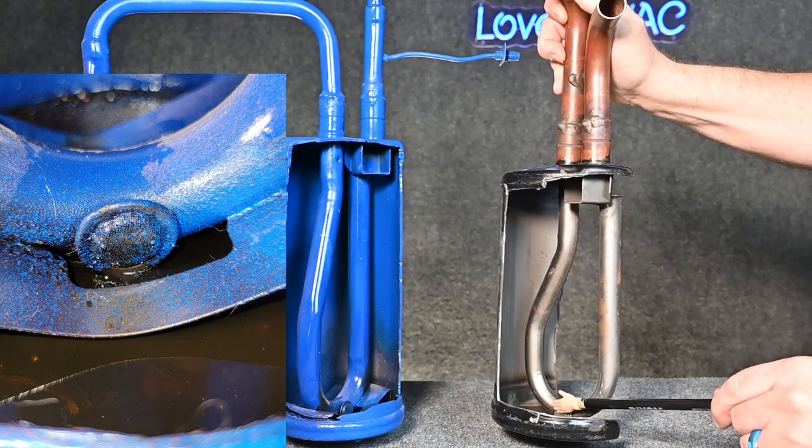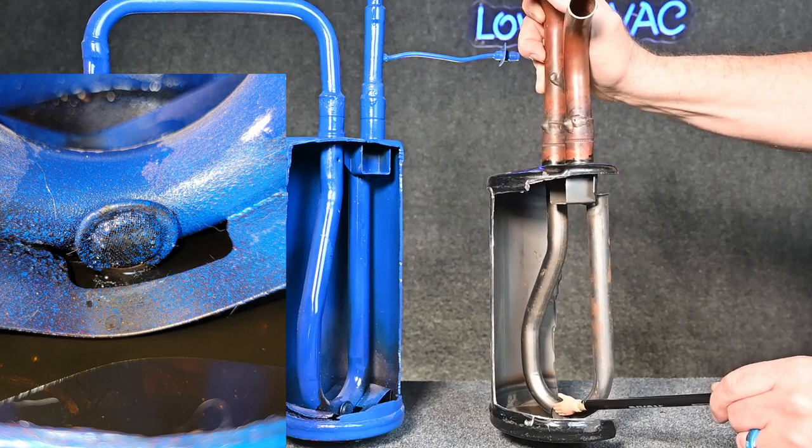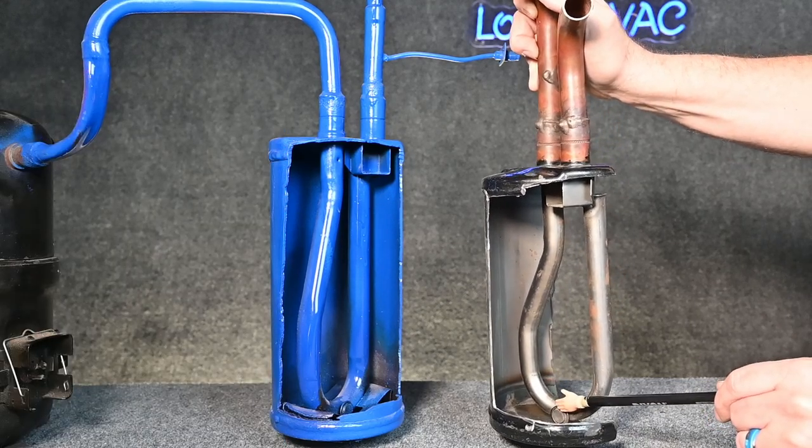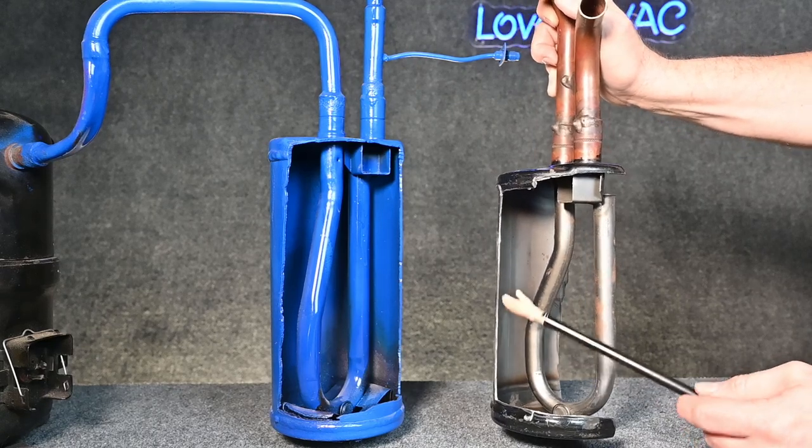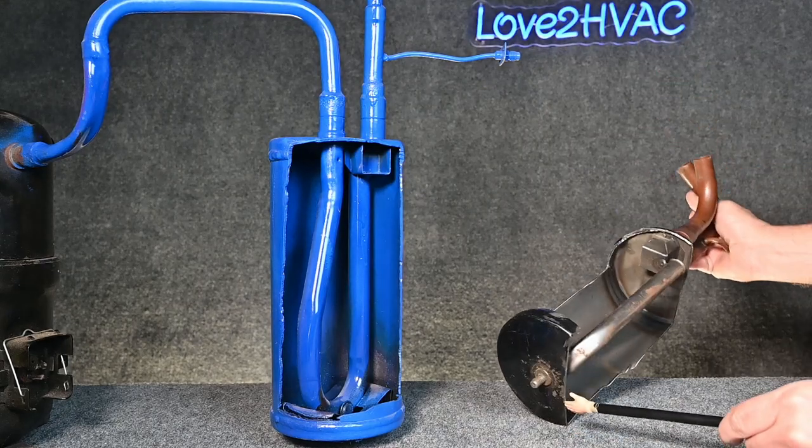So that screen is really, really important. And if we have a burnout, there's a good chance we're going to have to either drain the oil out of this or replace it. Now, a lot of people are big on draining the oil out, but you're still looking at a lot of work because you have to take both of these pipes loose. You have to undo the screw at the bottom.